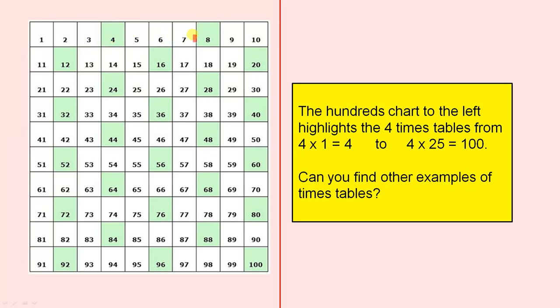So 4 ones are 4, 4 twos are 8, 4 threes are 12, 4 fours are 16, 4 fives are 20, etc., right up to 4 times 25 equals 100.